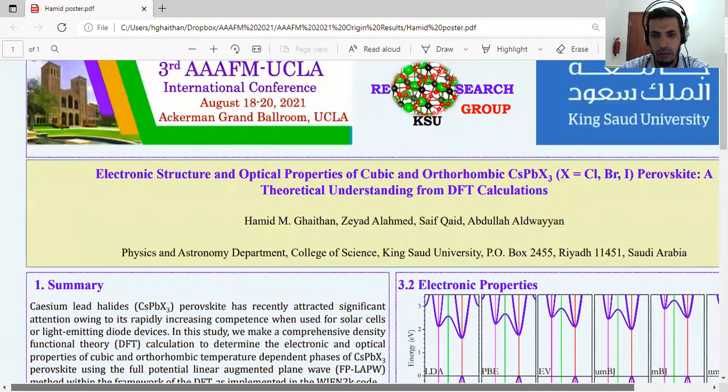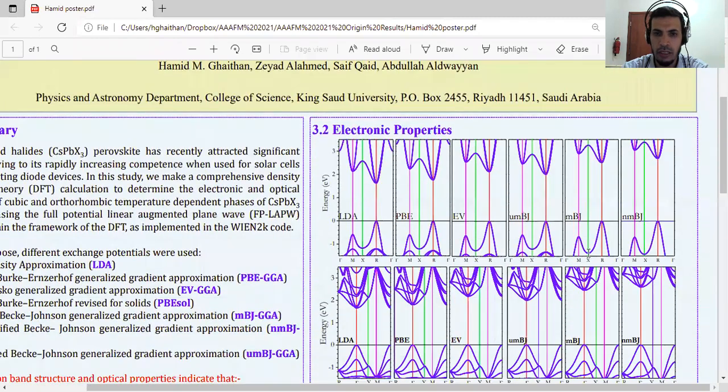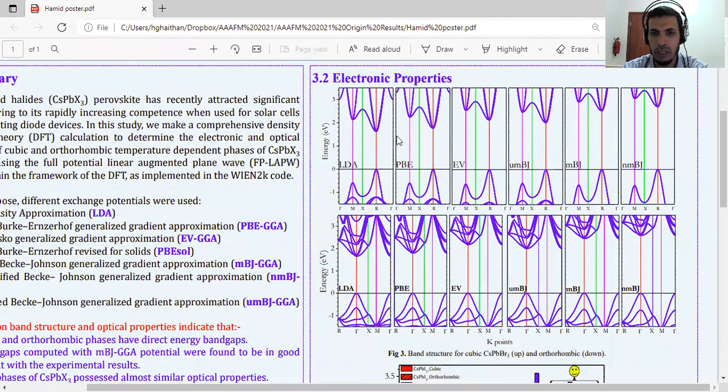For electronic properties, as you can see, we use the six methods from LDA, PBE, EV, modified MBJ, MBJ, and new MBJ. For cubic cesium bromide as an example, we selected cesium bromide here as an example. This represents the cubic one, and this one represents the orthorhombic one for cesium bromide.